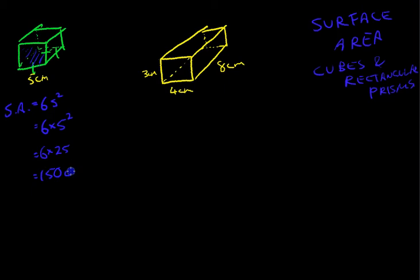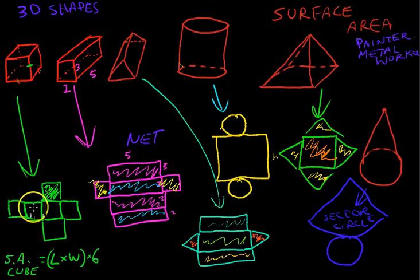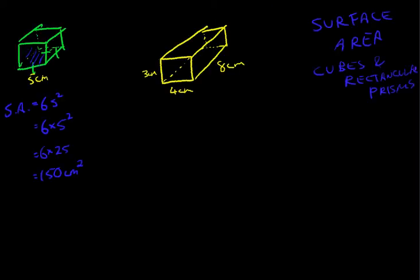Now make sure you get your units right here, it's one hundred and fifty centimeters squared. We're finding surface area, this isn't volume where we were doing cubed. So that's the surface area of a cube. It's just six squares. Find the area of one square and multiply it by six.